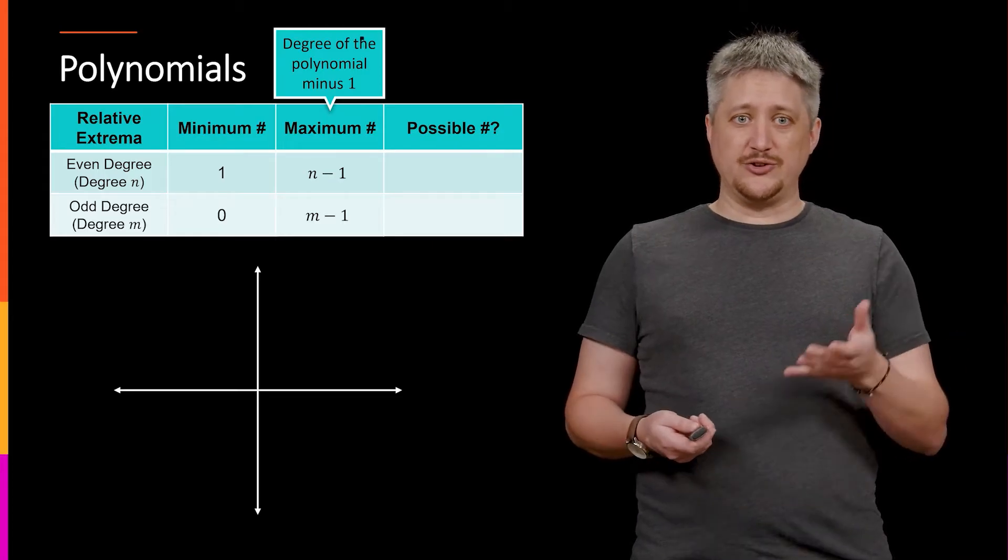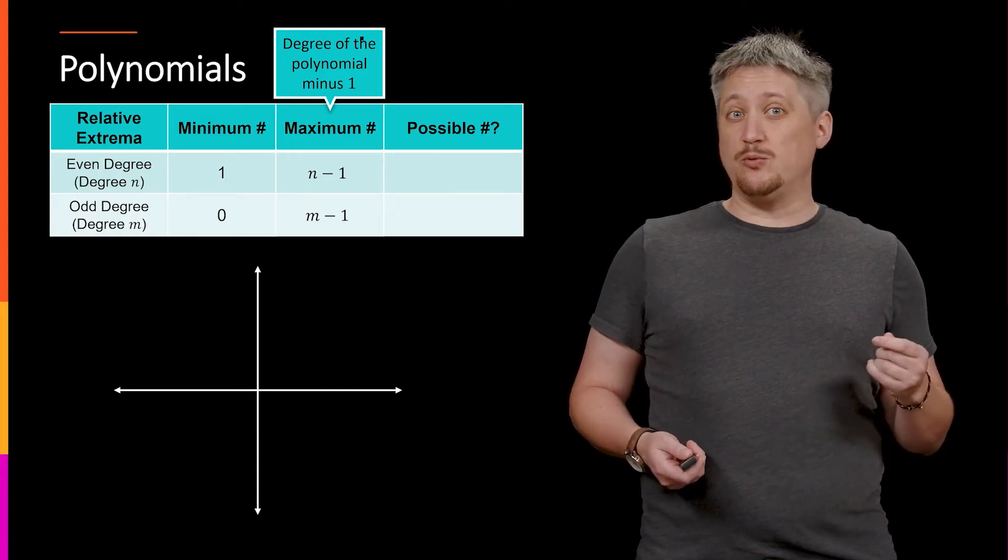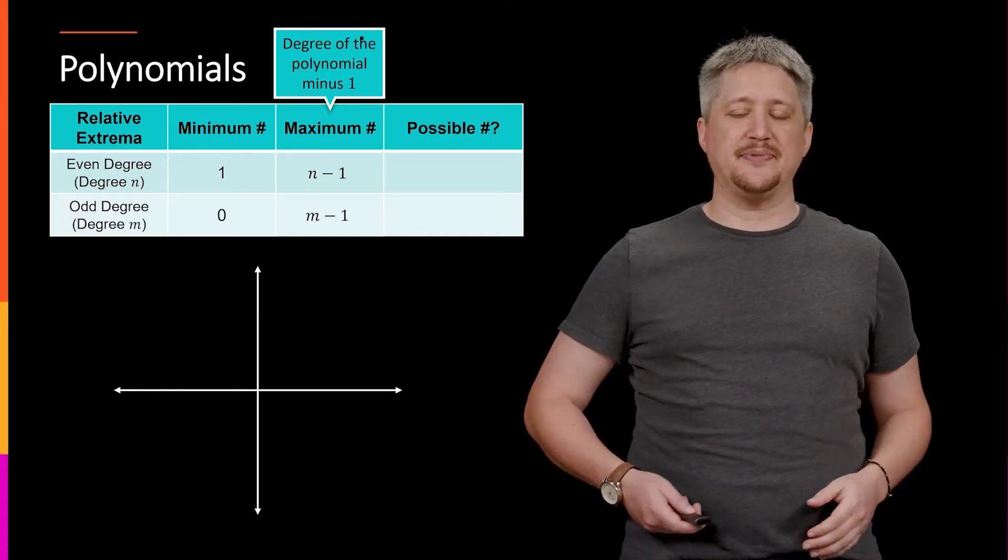So is it possible to have something that has, if we have like a degree four that has a one as a minimum, three as a maximum, could I get one, two, and three as possible values or only some of those? Is there a way to tell?